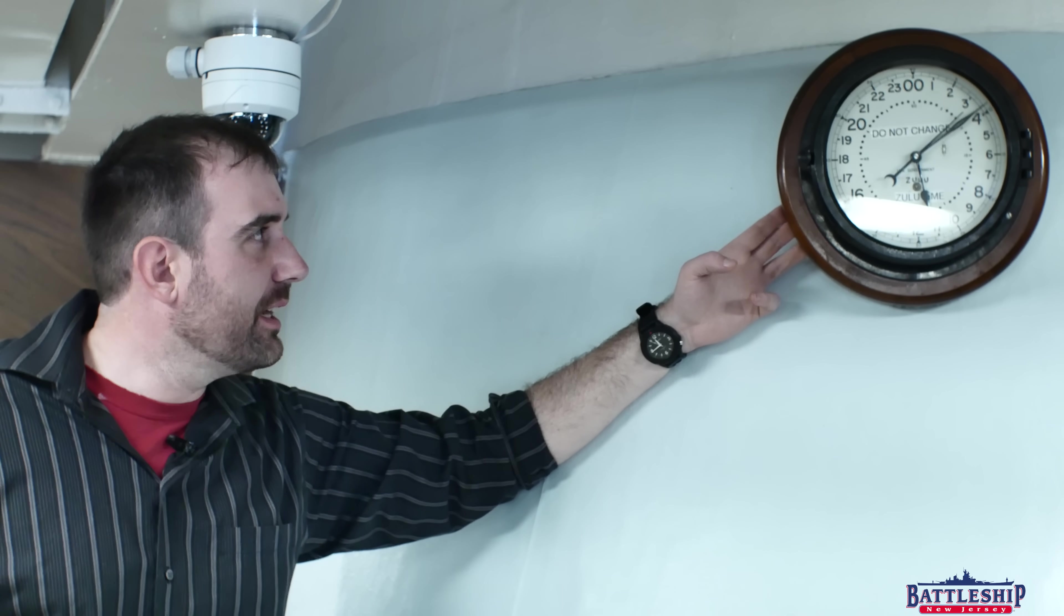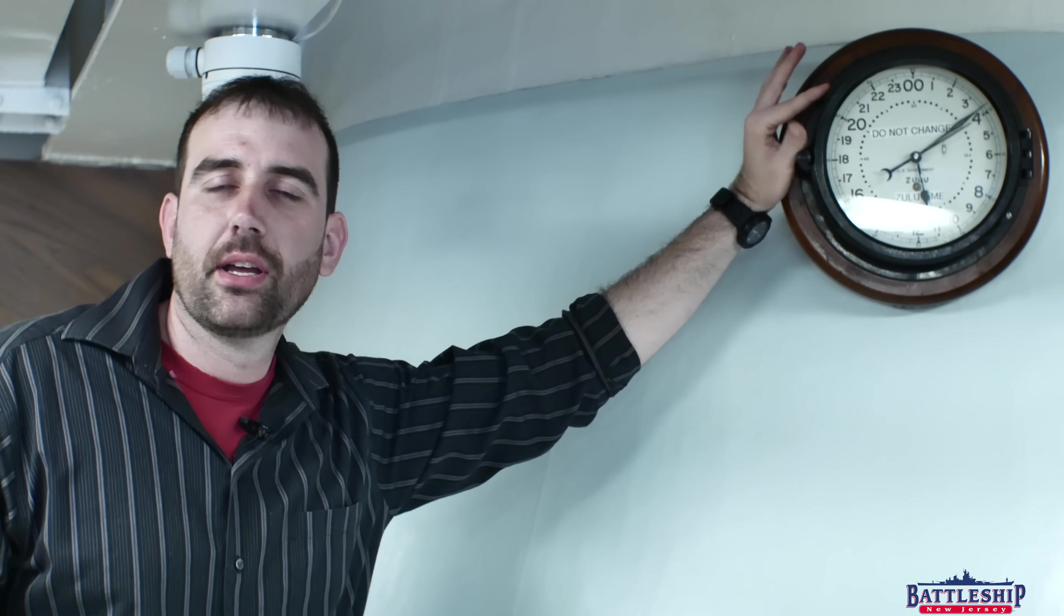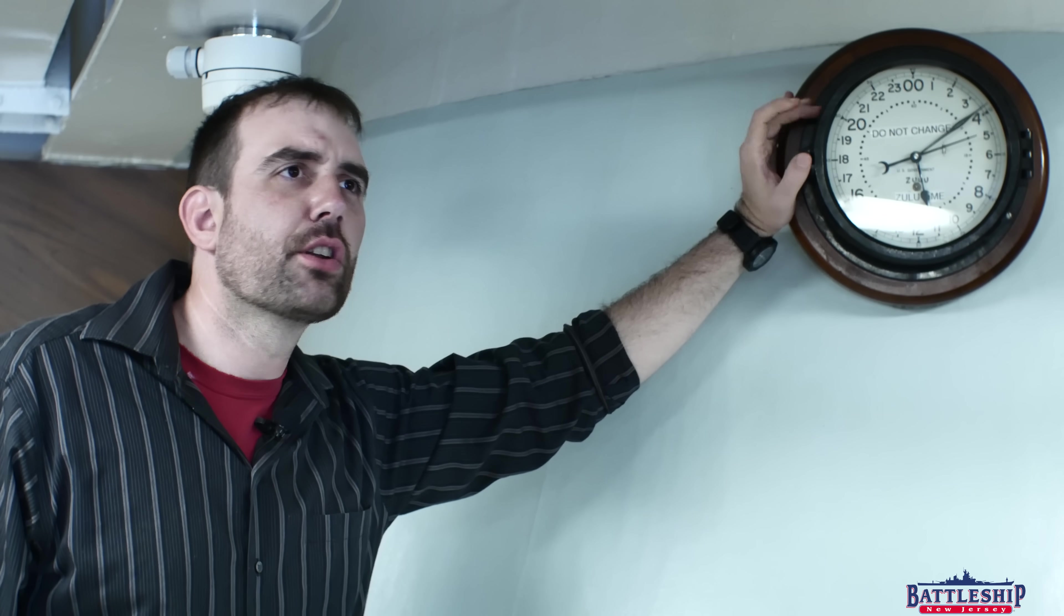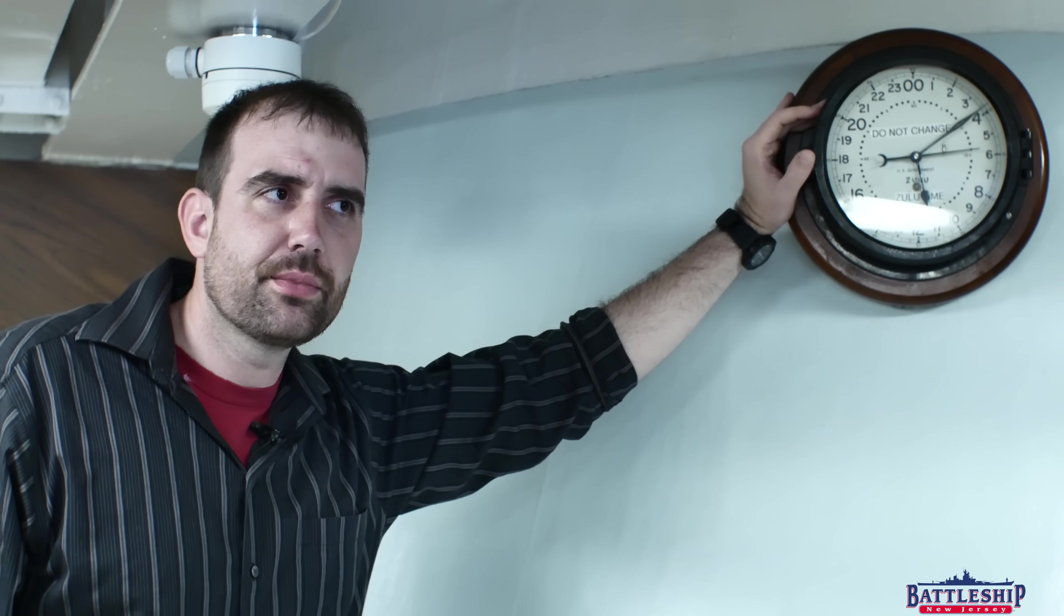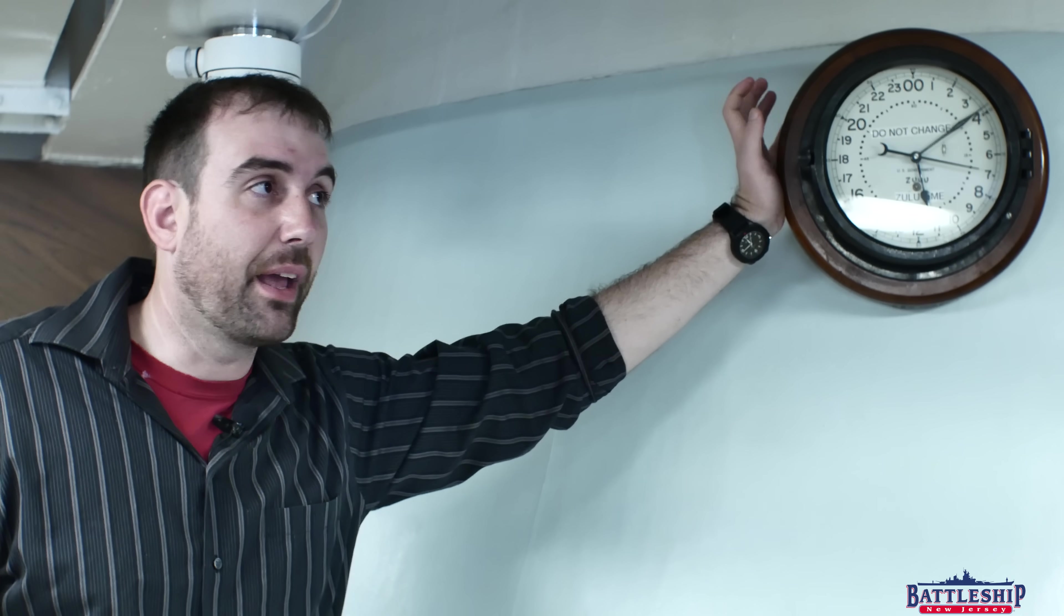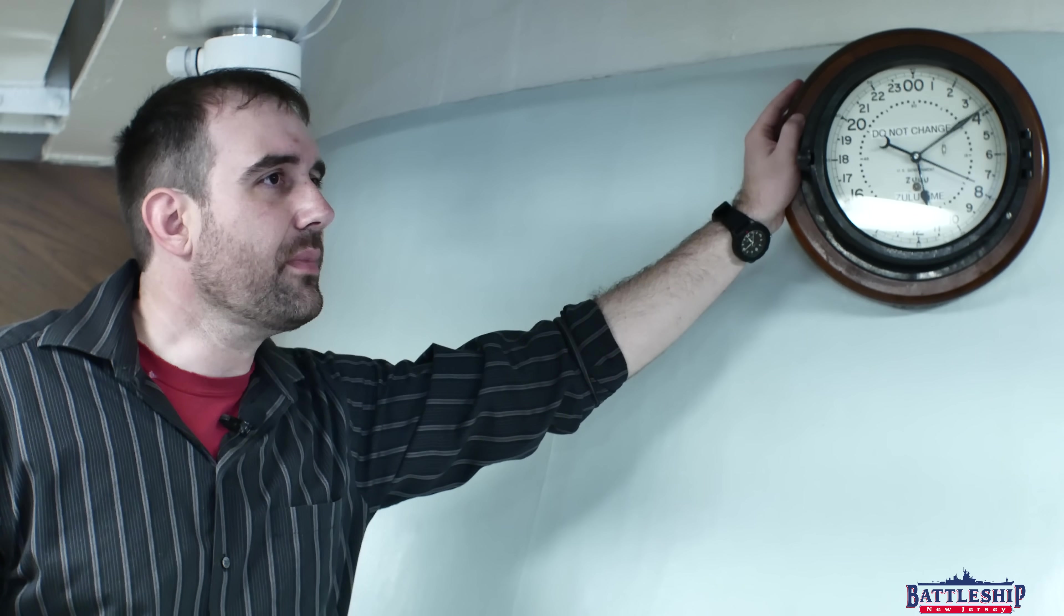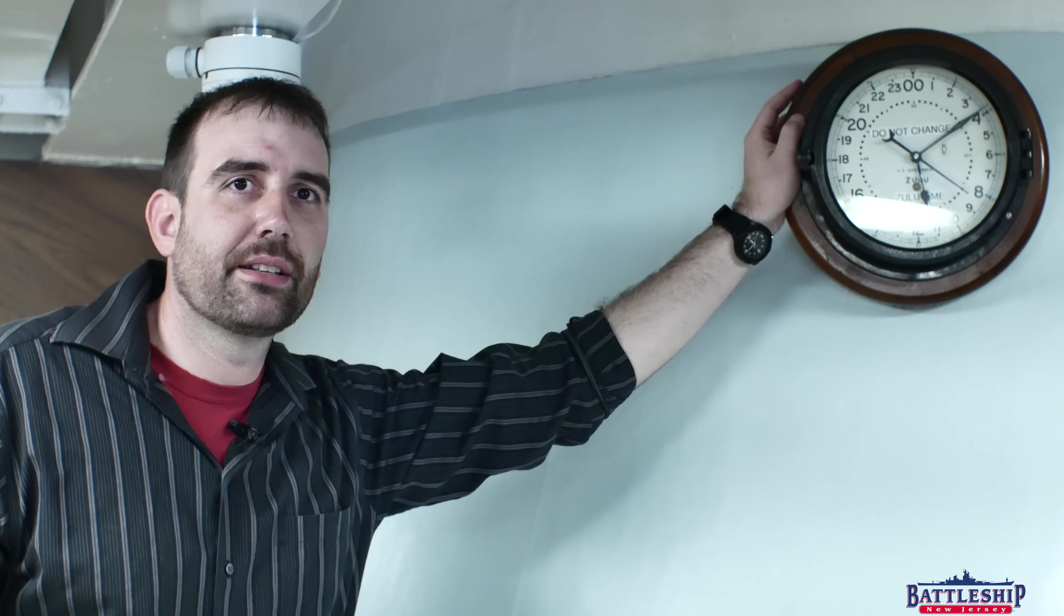I don't have a full count of how many clocks there are of these around the ship, but it's triple digits. They don't tend to be in individual staterooms, but they do tend to be in offices and communal spaces like this. So if you don't have one of these in your stateroom or your birthing compartment, how do you tell what time it is?